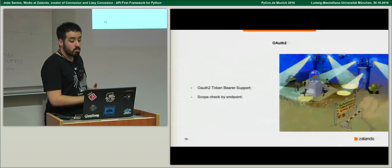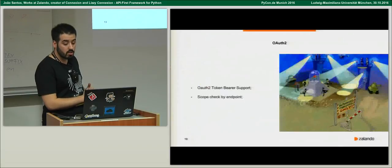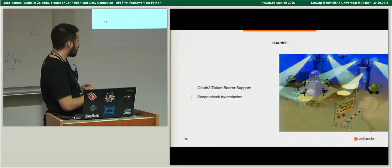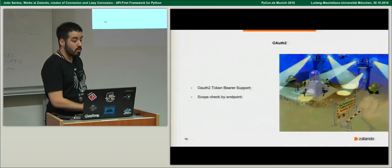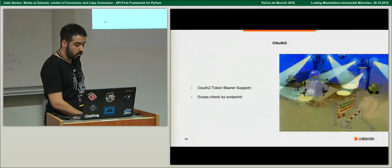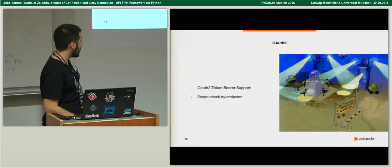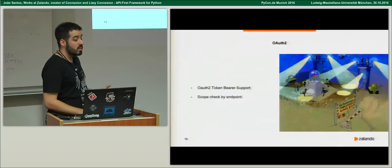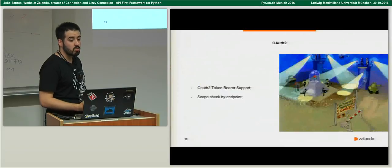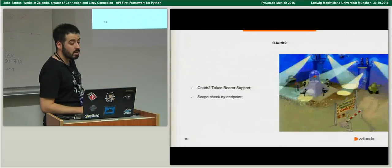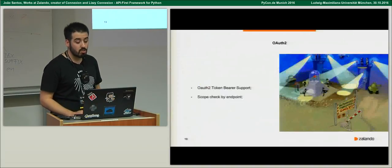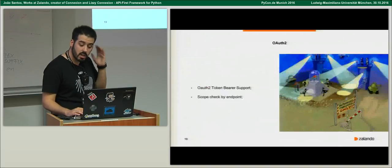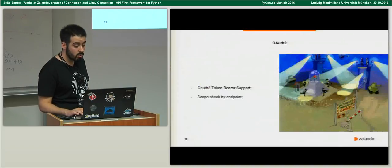Last but not least, we support OAuth 2 token bearer authentication and authorization out of the box. You can specify where you get tokens, where you validate tokens against — the token info URL — and you can define for each endpoint what scopes are needed to perform each action. Everything will be handled for you; if you are using OAuth bearer token authentication, you don't have to worry about it.